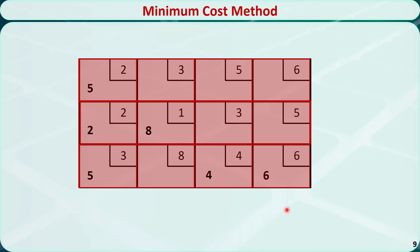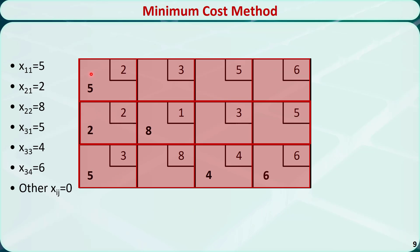How do we interpret this basic feasible solution? It means x11 is equal to 5, x21 is equal to 2, and so on and so forth. All other x_ij in the blank cells are equal to 0. If you wonder if this really is a basic feasible solution, you can check whether it satisfies all the equality constraints.